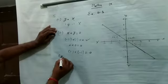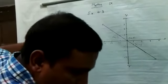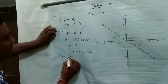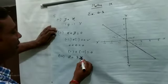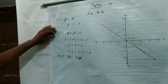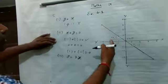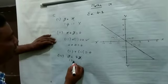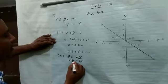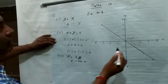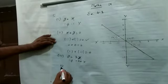Equation third: y is equal to 2x. इसको check करना है. y की value 1, x की value minus 1. 1 is equal to 2 into minus 1, यानी 1 is equal to minus 2 — यह नहीं होगा. First point satisfy नहीं करता तो आगे check करने की जरूरत नहीं.